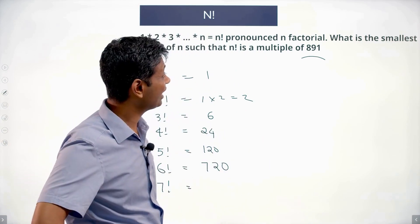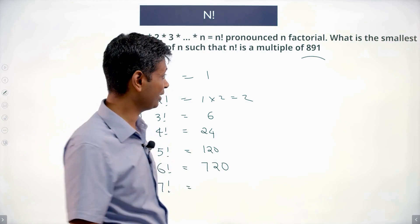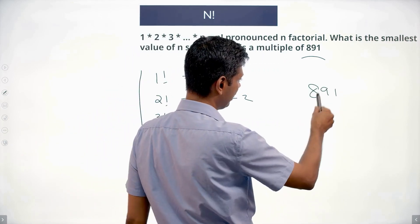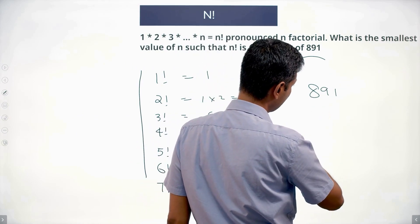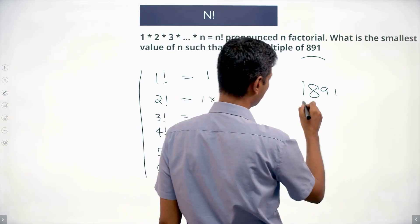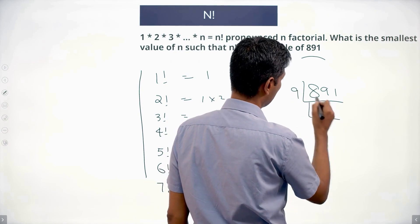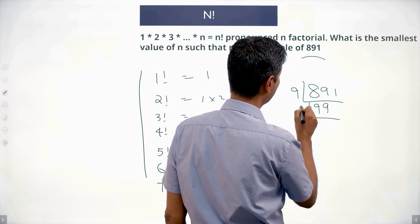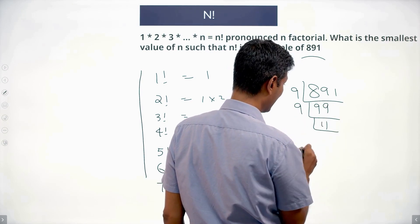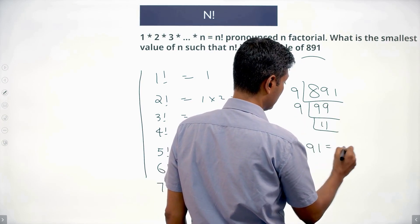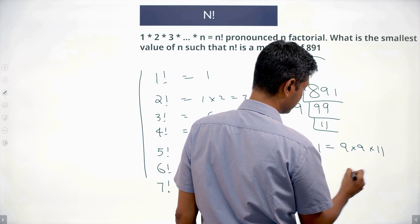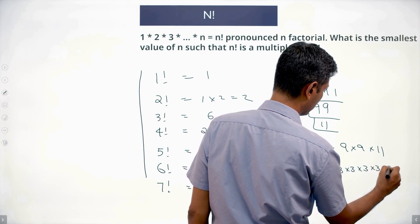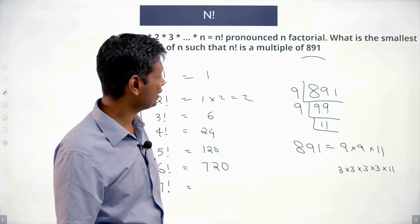I'm going to investigate 891. 891 is not some random number. Let me factorize it. 891 is odd, so it's not a multiple of 2. But 8 plus 9 plus 1 is 18, so the number is a multiple of 9. Dividing by 9 gives 99, and 99 is 9 into 11. So 891 is 9 into 9 into 11, or 3 into 3 into 3 into 3 into 11.